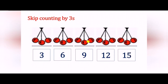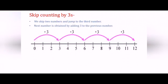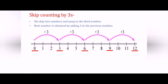Now let's do skip counting by 3s on a number line. In order to skip count by 3s, we skip 2 numbers and jump to the third number. So here if we start from number 0, we have to skip 2 numbers which are 1 and 2, then the arrow will jump on number 3. Again we skip 2 numbers which are 4 and 5 and the arrow jumps on number 6. Accordingly it will jump forward on numbers 9 and 12.